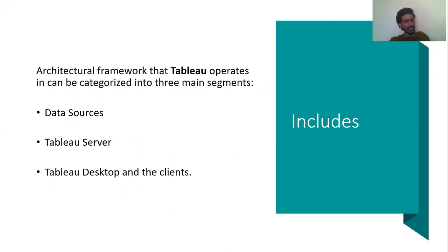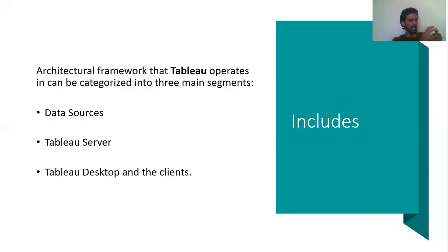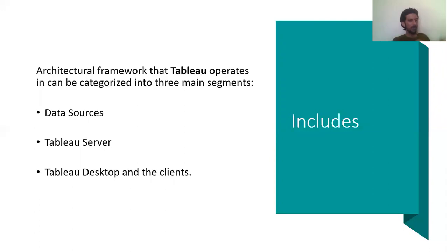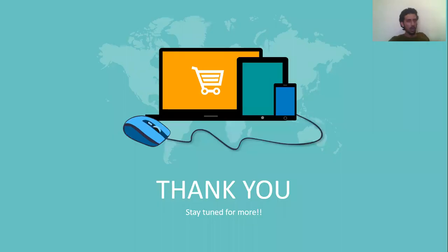The architectural framework on which Tableau operates is categorized into three major segments: data sources, Tableau Server, and Tableau Desktop and clients. Data sources is where the information is generated. It then moves to the Tableau Server where information is fed and processed, and finally that information is utilized by people using Tableau Desktop or by the end client.